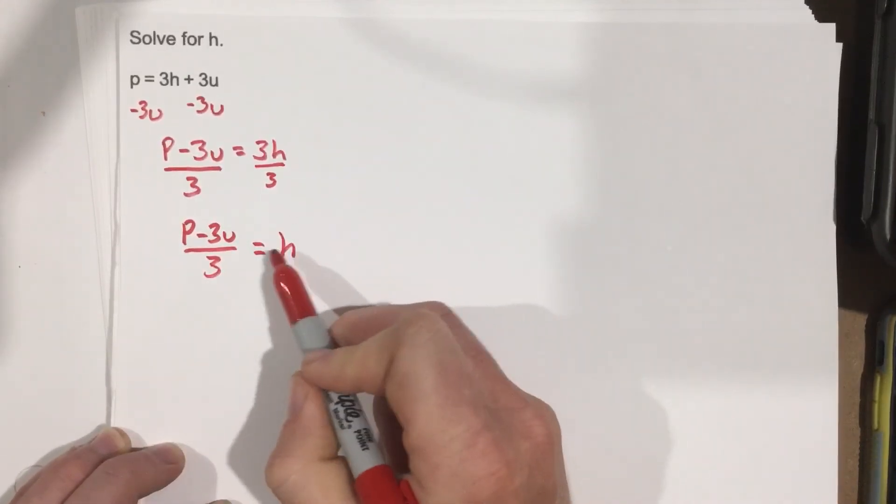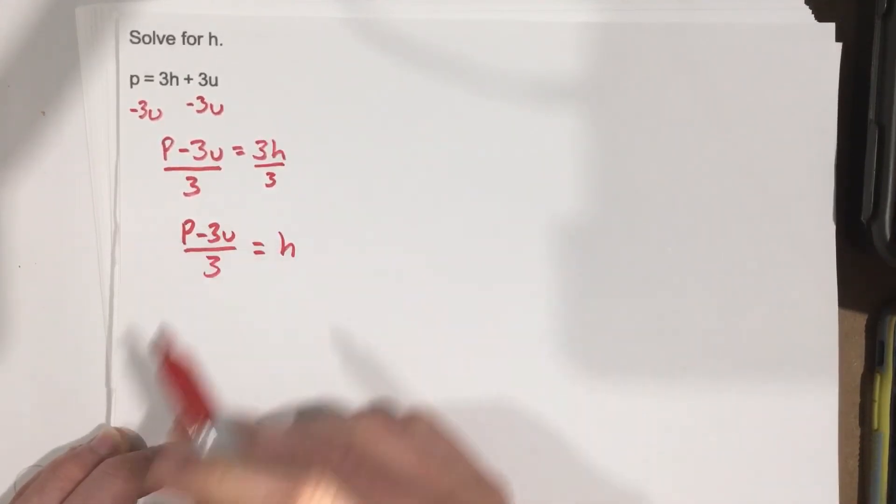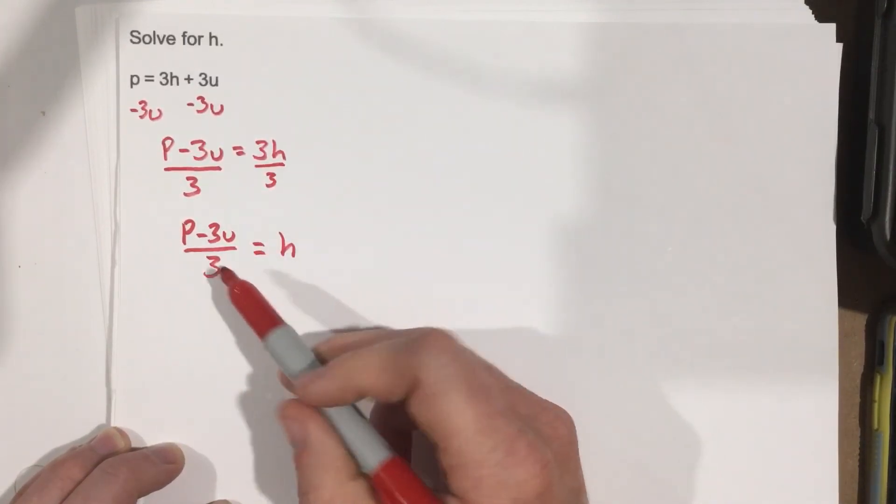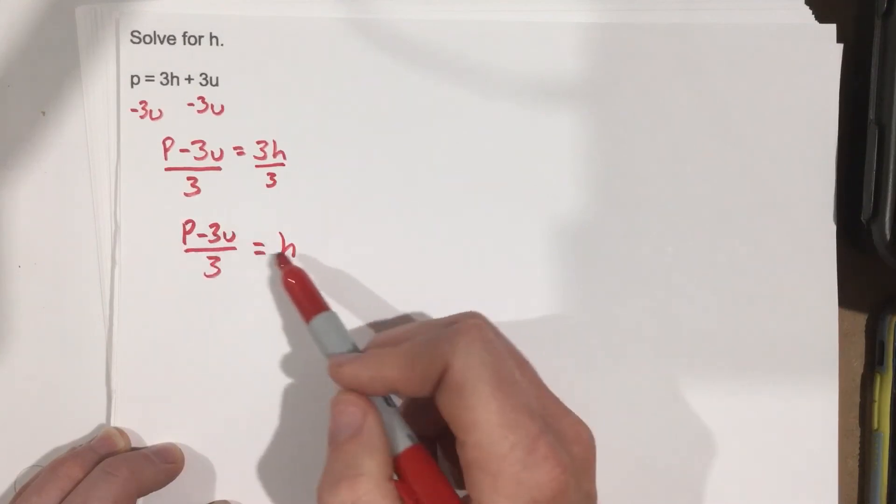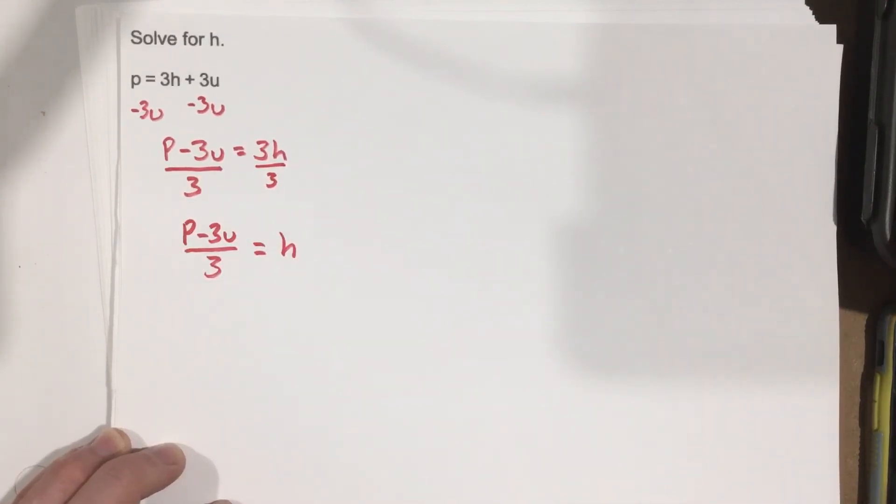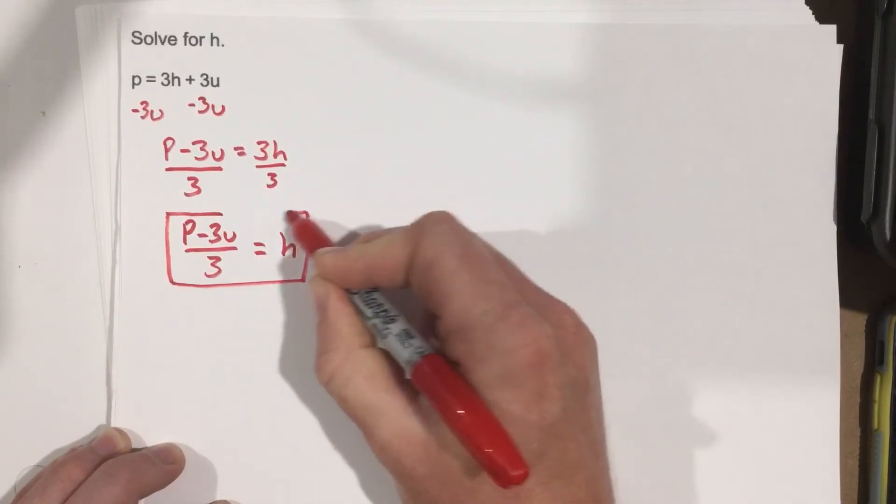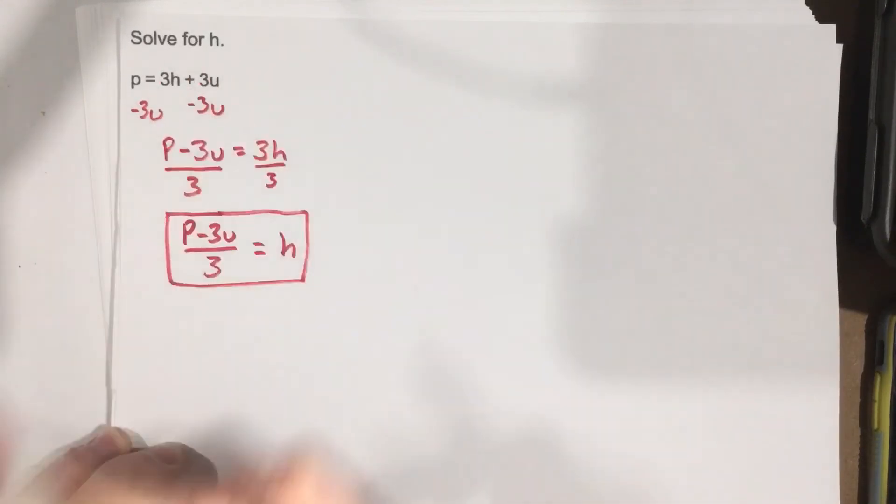We now have h equal to this here. So we have an equation that's been solved for h. So now if we know p and u, we can figure out h at this specific moment. So this is the solution for solving for h.